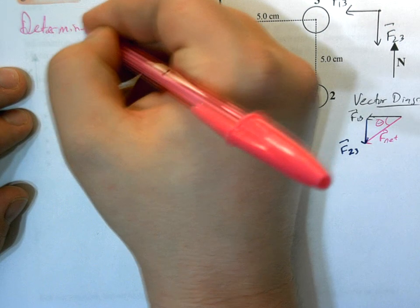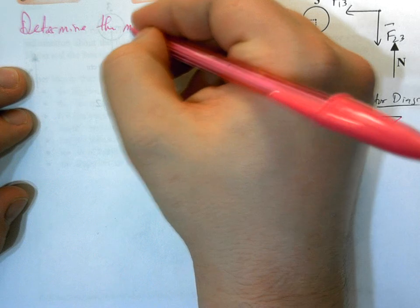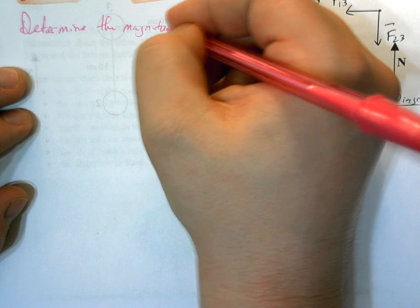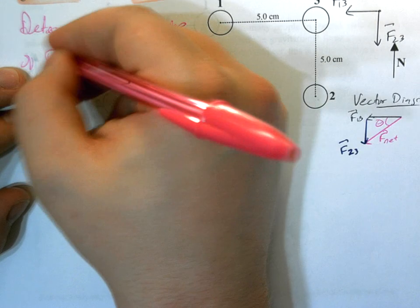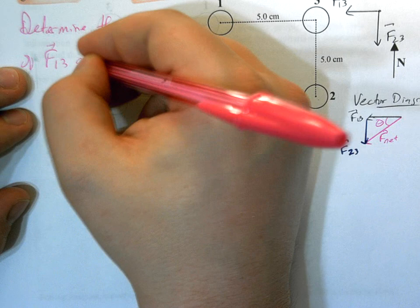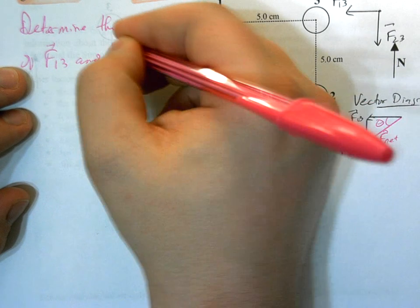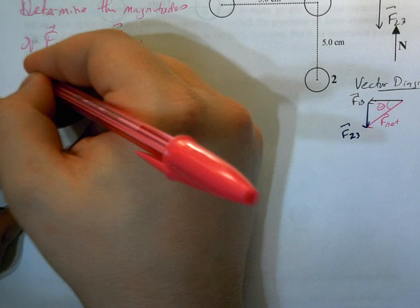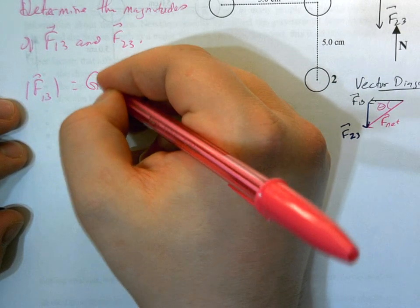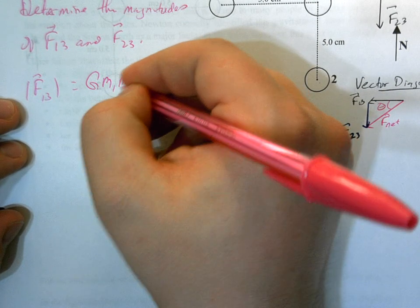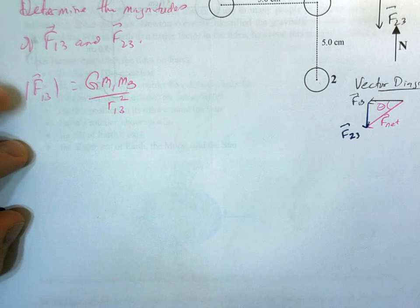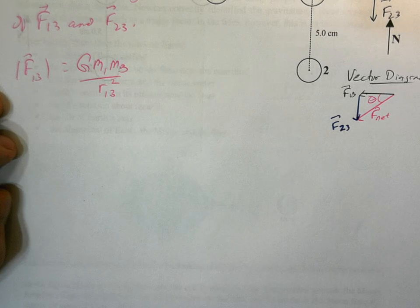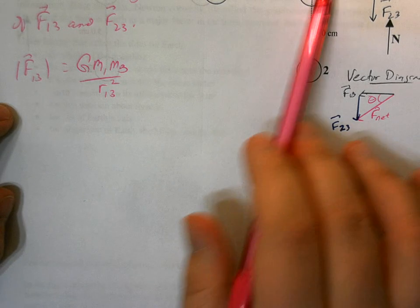So we're going to determine the magnitudes of F1,3 and F2,3. So for F1,3, it's going to be G times mass 1 times mass 3 divided by that distance between R1,3, or between 1 and 3 squared.